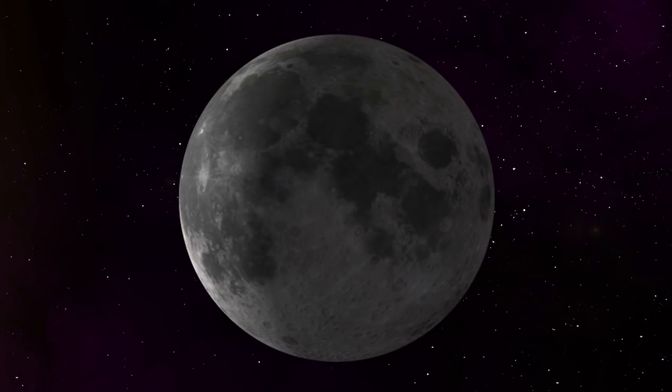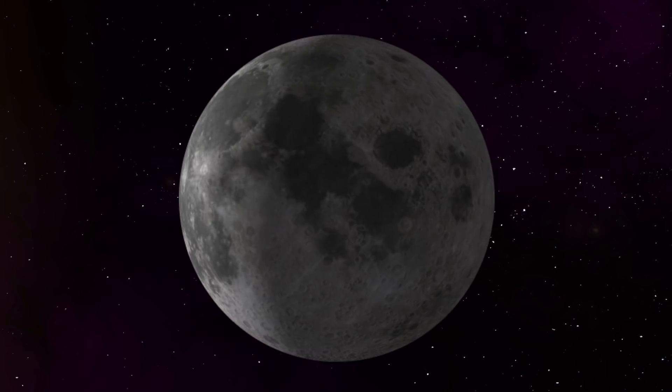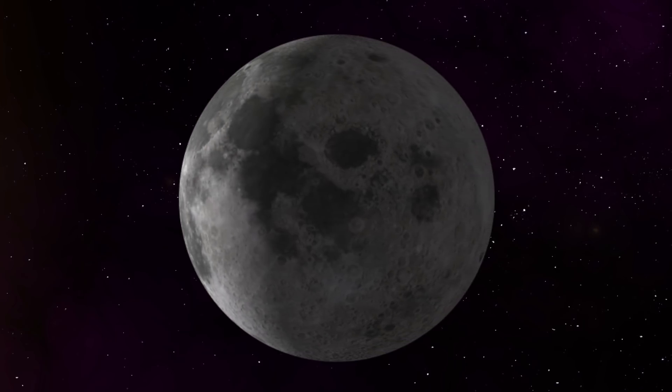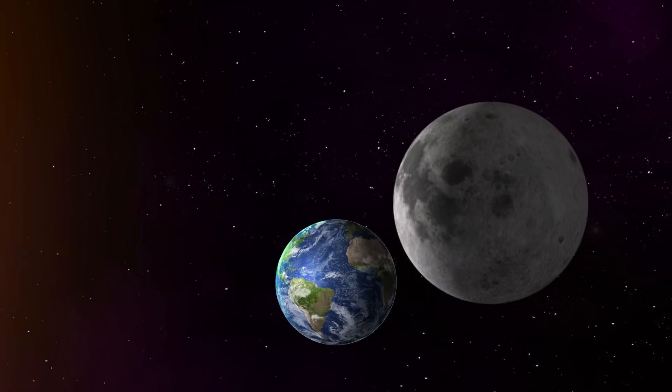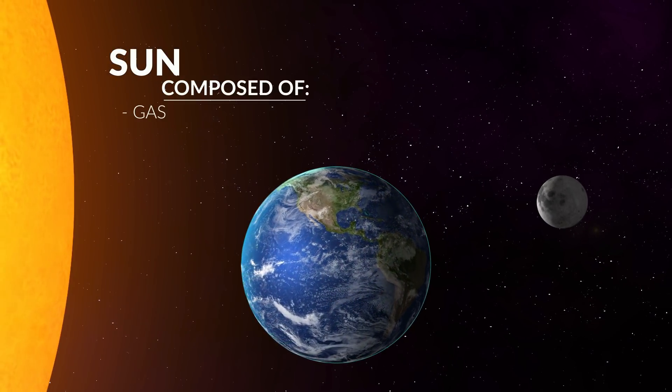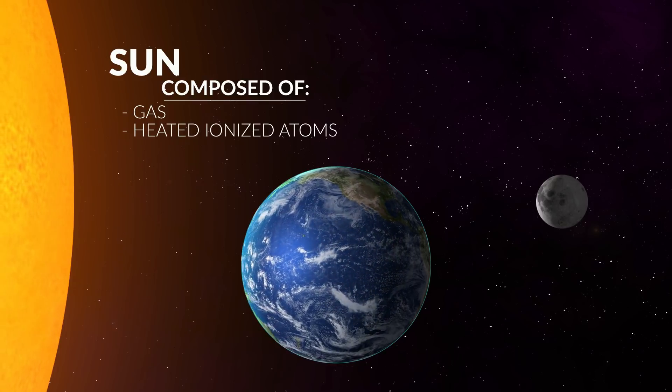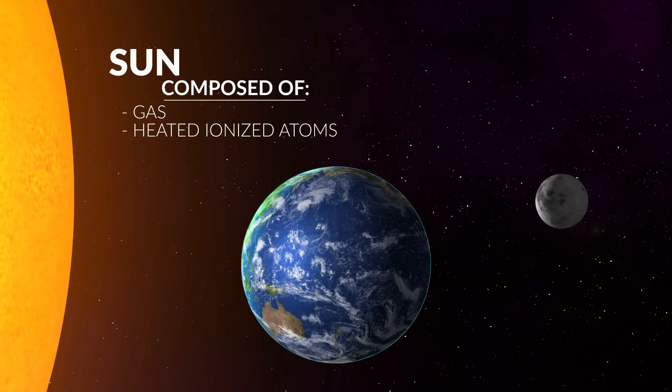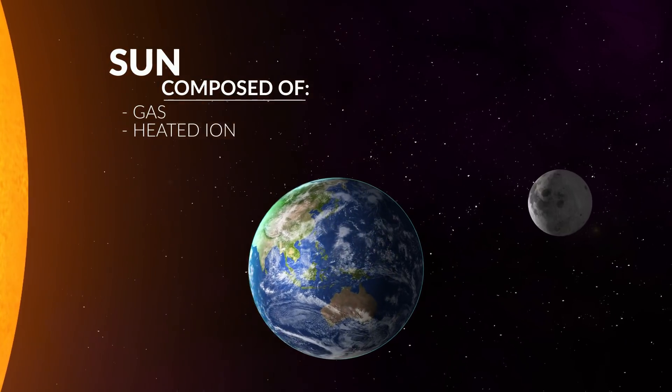While the moon is the luminary that lights up the night, it's interesting and important for us to observe. The moon actually does not produce its own light like the sun does. The sun is composed of gas and ionized atoms that are heated so much that they emit various forms of energy, including the visible light we see on Earth.